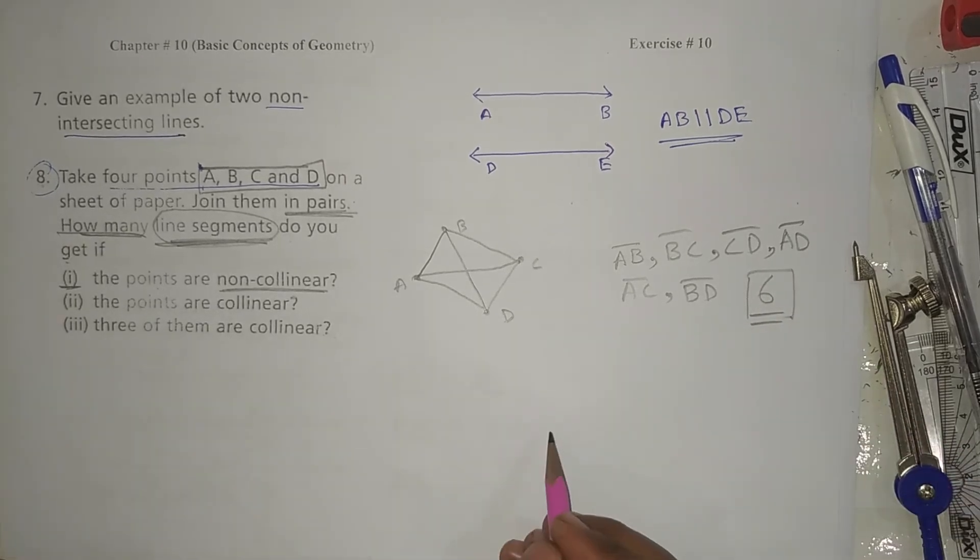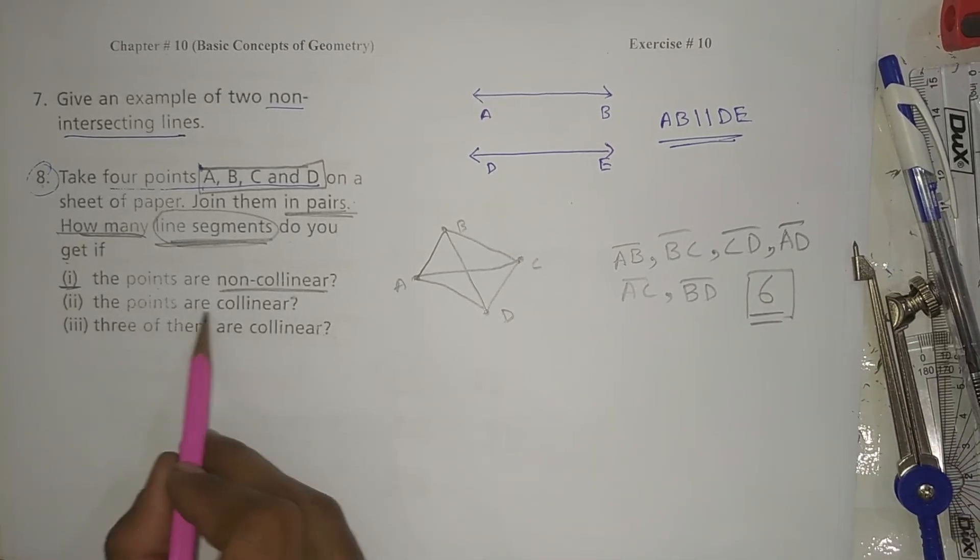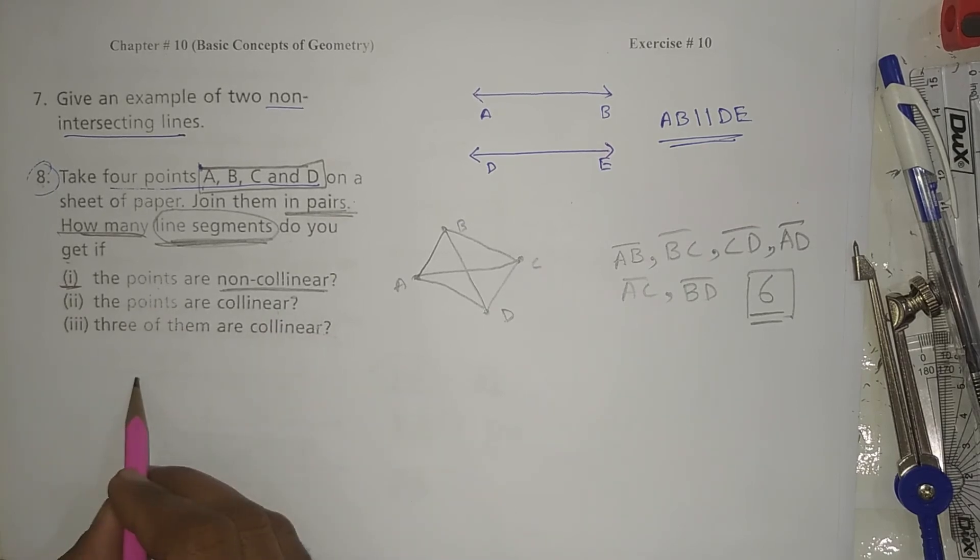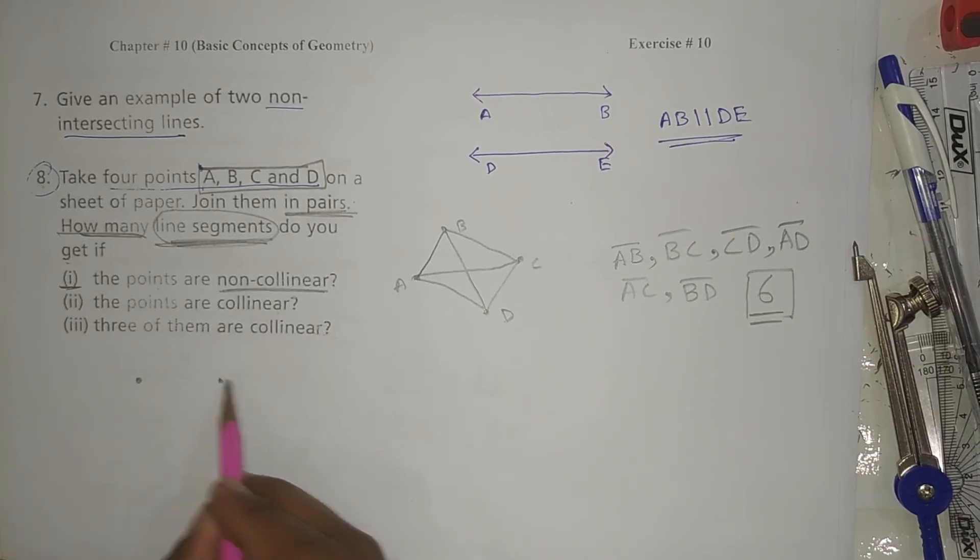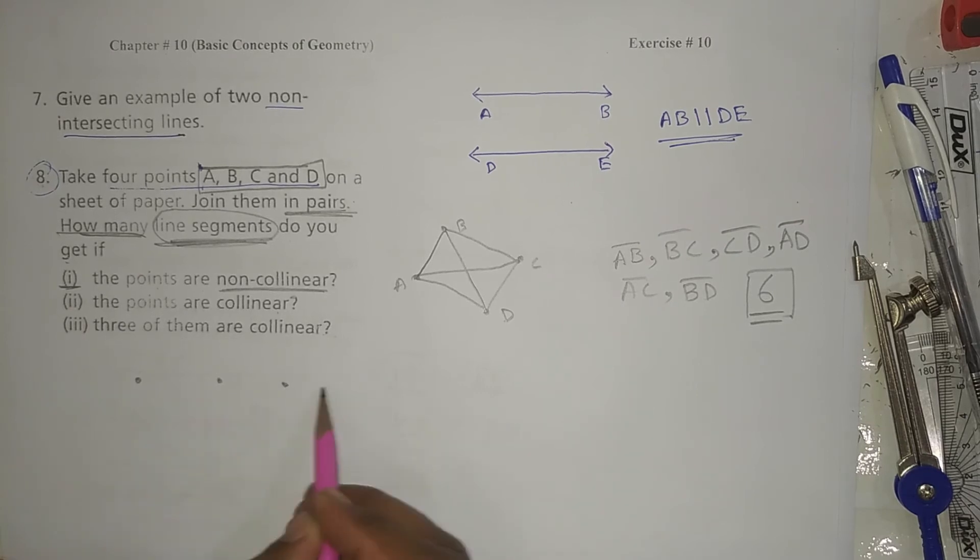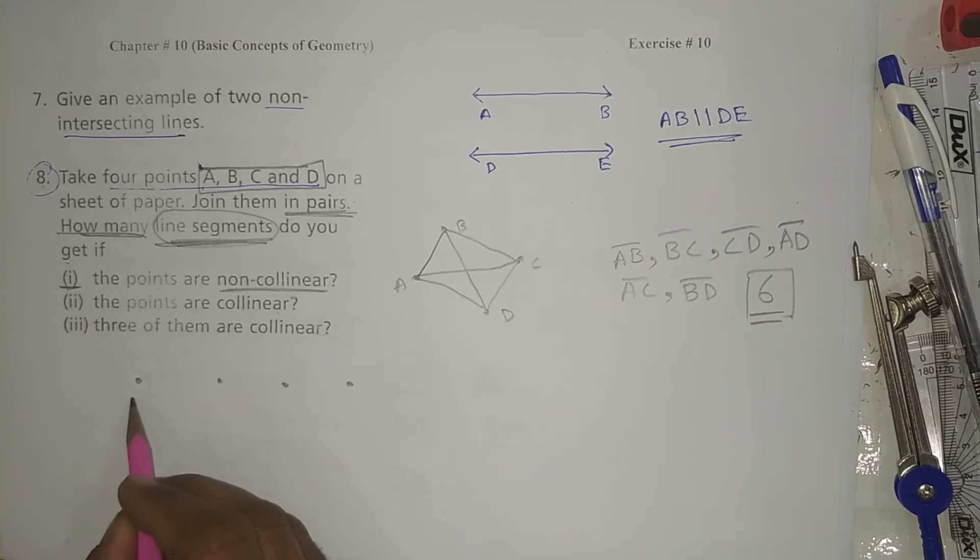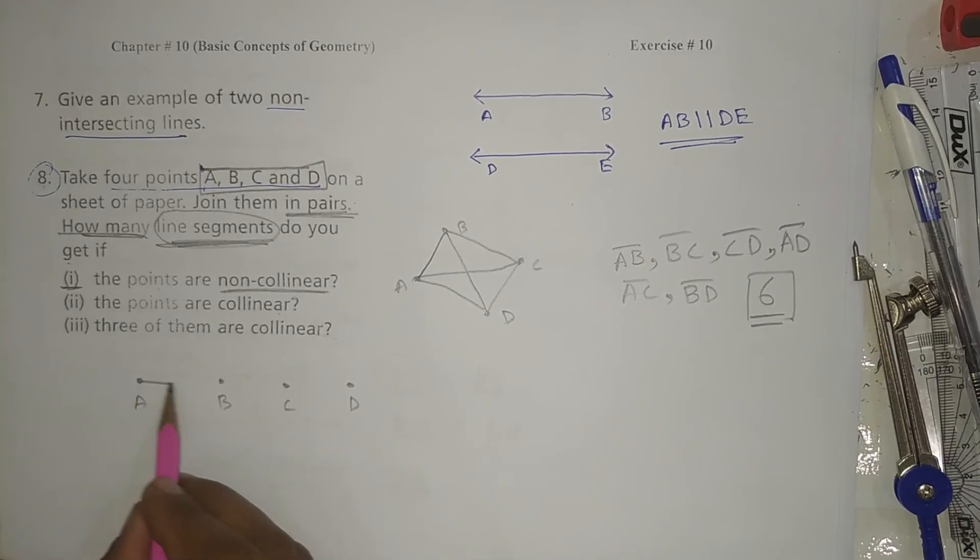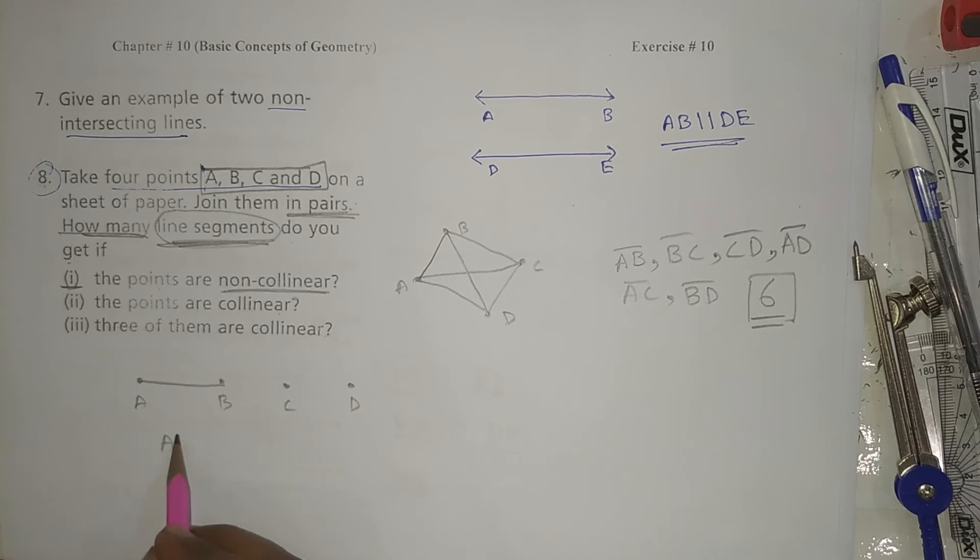Okay, the points are collinear. Collinear points are in the same straight line. So then I can draw like this: A, B, C, D.